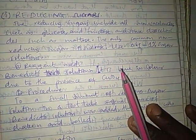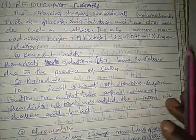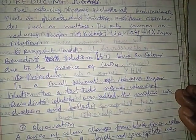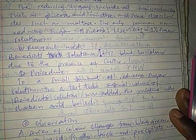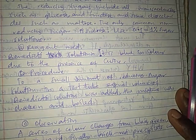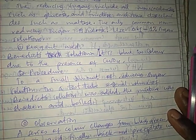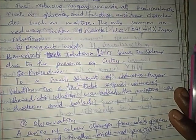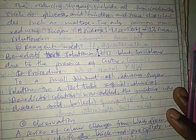The reagent used is Benedict's solution. Benedict's solution is the first reagent used in testing, and as we discussed earlier, we also have the Phoenix test which uses Benedict's solution. Remember that Benedict's solution is a solution of dilute copper(II) sulfate, which appears blue in color.